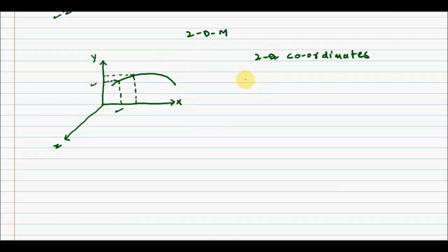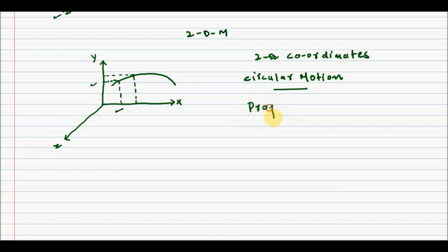Circular motion is an example of two dimensional motion. Projectile motion, under certain conditions, is also an example of two dimensional motion. We'll be discussing projectile motion in later videos.